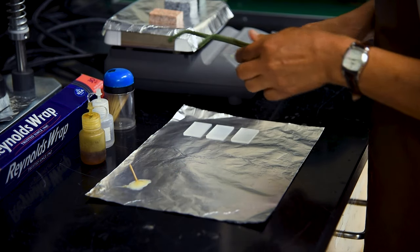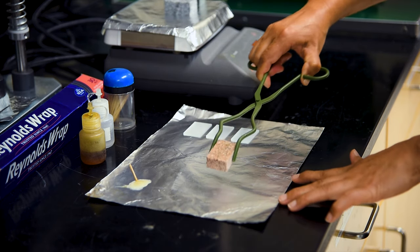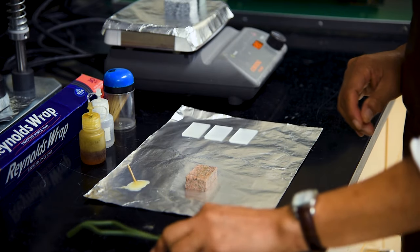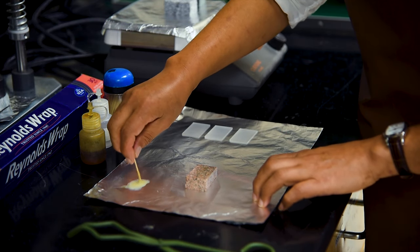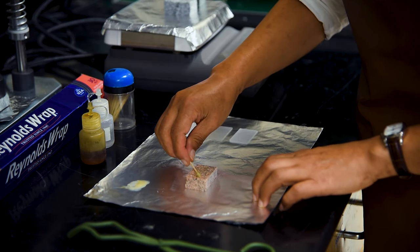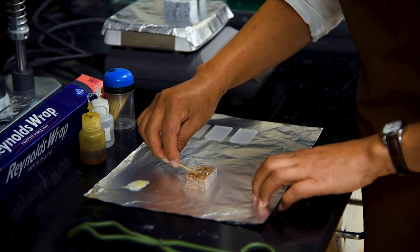Using the tongs, the sample chips, which have been heating up on the hot plate, may now be retrieved and placed polished side up on the sheet of foil. Using the toothpick, epoxy may now be applied to the polished surface of the hot sample chip. The heat will reduce the viscosity of the epoxy and allow it to flow more easily across the surface and to seep into any pores or microfractures in the sample.